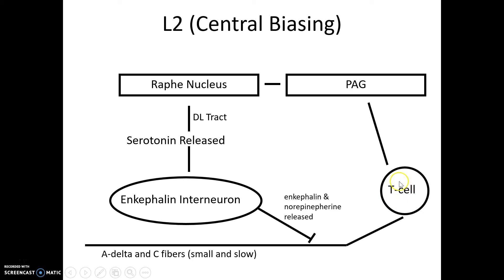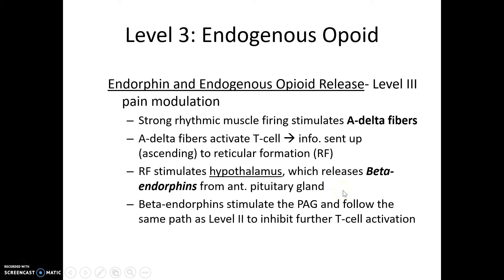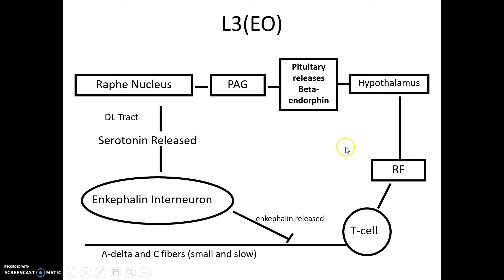The level three pain control theory, or the endogenous opiate theory, is very similar to the level two gate control theory except in this case we're wanting a strong rhythmic contraction of muscle firing. This activates the A-delta fiber — whereas level two pain control was focused on activating C fibers. Here we have the A-delta fiber activating the T cell to send information up to the reticular formation, stimulating the hypothalamus to release beta-endorphin from the anterior pituitary gland. This beta-endorphin then causes our periaqueductal gray matter to follow the same path as before — the raphe nucleus, serotonin release, and enkephalin interneuron are the same as our level two pain control theory.